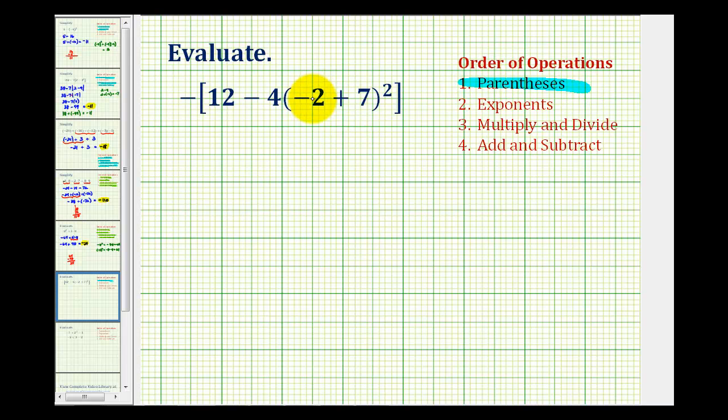So we'll have to simplify this sum here. Well negative 2 plus 7 is equal to positive 5. So we'll write this as the opposite of the quantity 12 minus 4 times positive 5. But this is still raised to the second power.